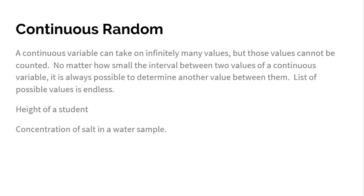Whereas a continuous quantitative variable is that it can take on infinitely many values, right? But those values cannot be counted - they're measured. No matter how small the interval between two values of a continuous variable, it is always possible to determine another value between them. So think here, the list is infinite. I gave an example here of height of a student. If you think of the height of a student and you come up with an interval, like you say the height of a student can be anywhere from 65 to 66.